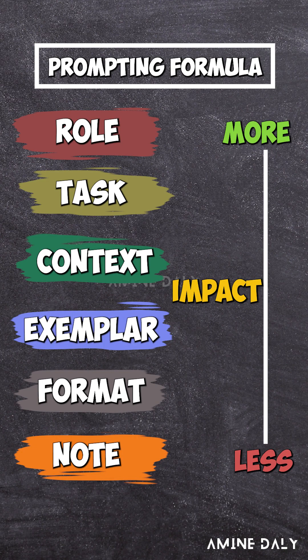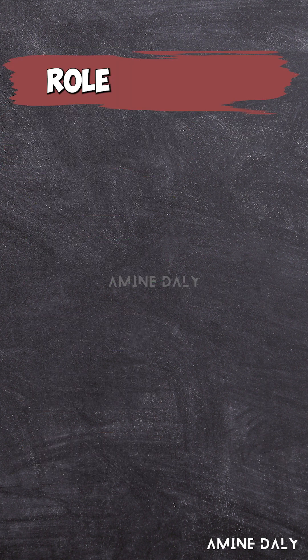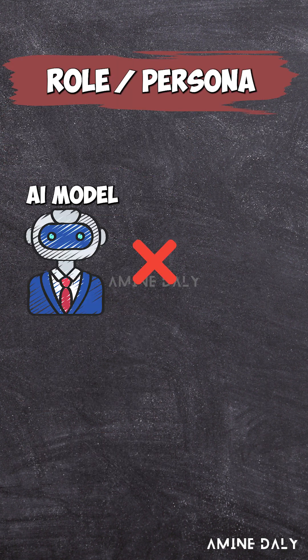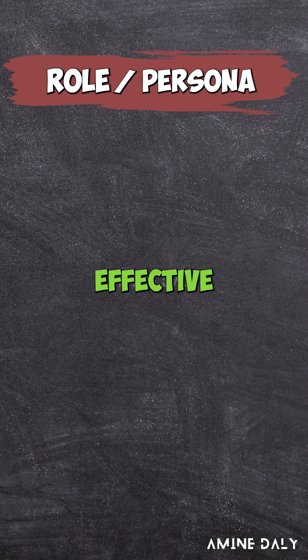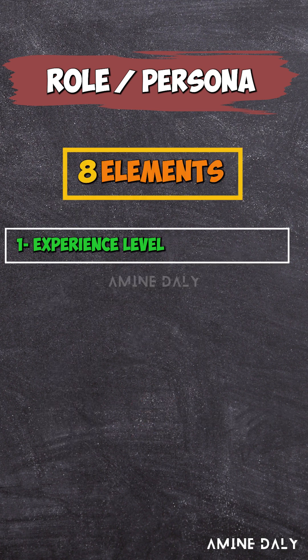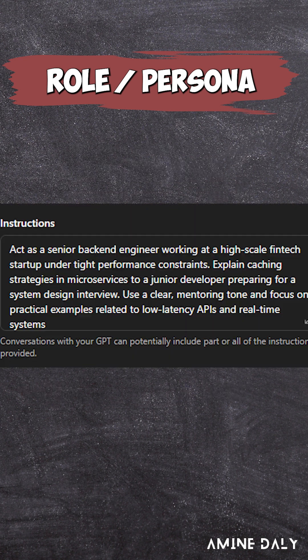In the previous video, we introduced the formula that guides the model to the right output. The first element in that formula is the role, or what we sometimes call the persona. An AI without a role is like a brain with no identity. A truly effective role can include up to eight elements, and here is the role given to the model, for example.